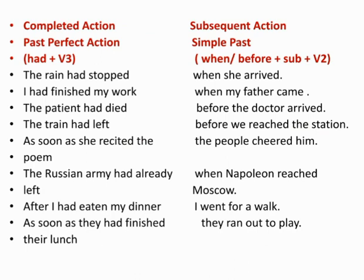Here you can see the pattern: completed action and subsequent action. The first completed action is in past perfect — had plus V3 — and the second one is in simple past. For example: 'The rain had stopped when she arrived.' Had stopped is past perfect, meaning the rain stopped first, and then she arrived — that is the second action in simple past.